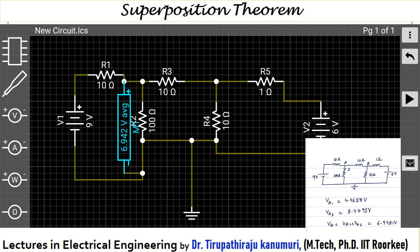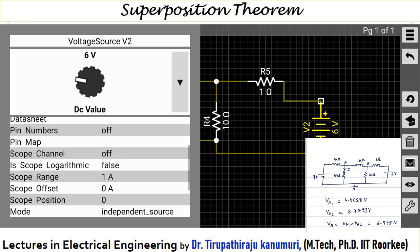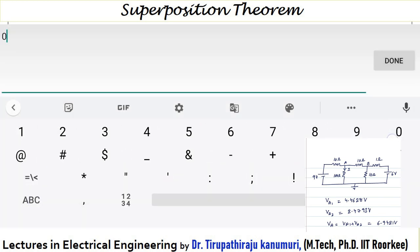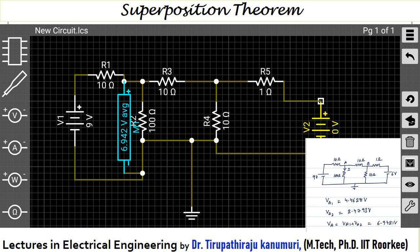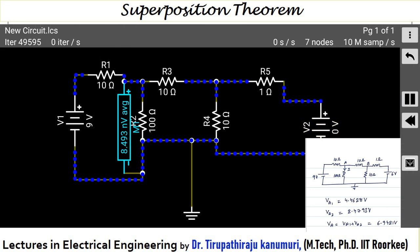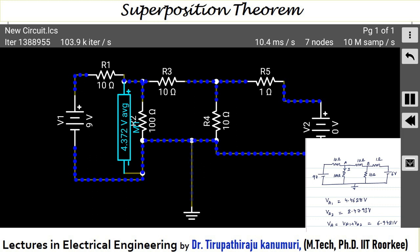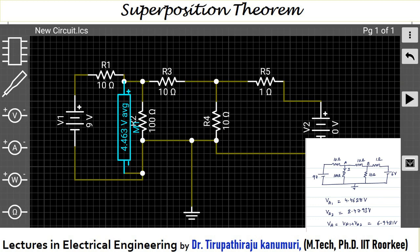Now to see the effect of each source separately: I double-click on one source and set its value to 0, keeping only the 9 volt source. I press run again. Once it stabilizes and I press pause and rewind, it shows 4.463 volts. Theoretically we got 4.4628 — they are rounded off to the third digit, so the values match.